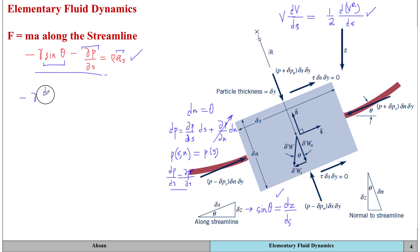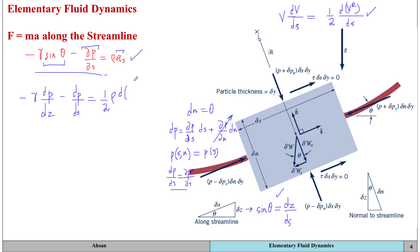Once we do that, this equation becomes minus gamma times dz/ds, and partial p by partial s becomes dp/ds. On the right-hand side the equation becomes one-half times 2ρ from here and v-squared divided by ds. So this is how we simplified — this was minus gamma into dz by ds.